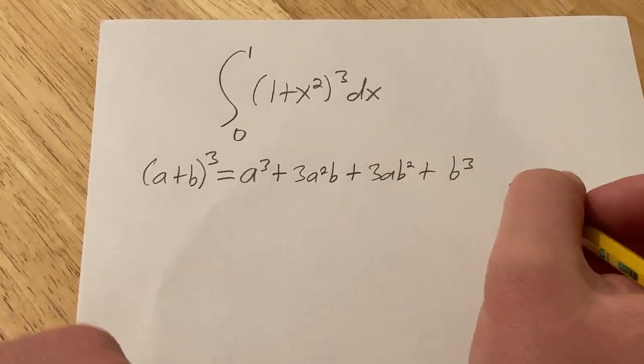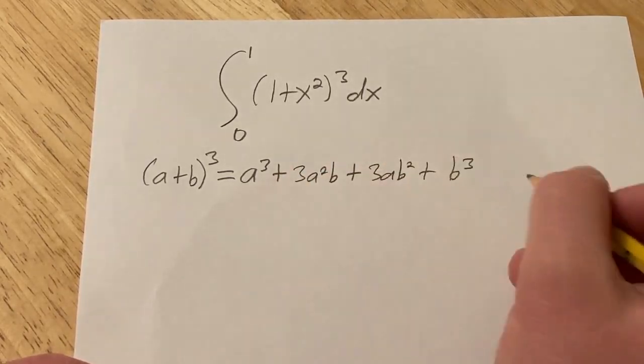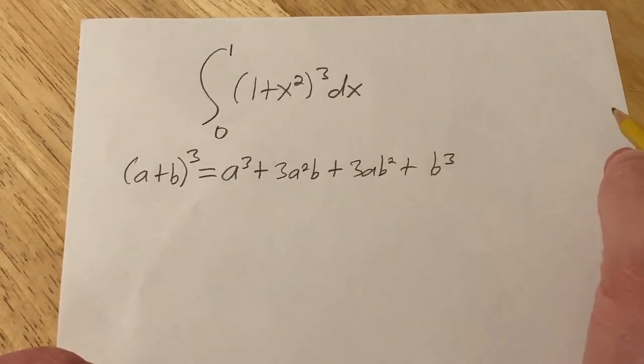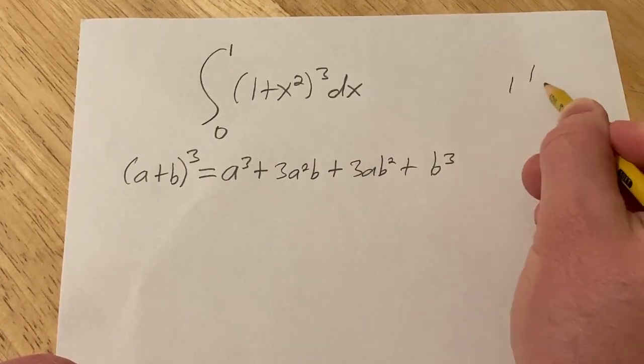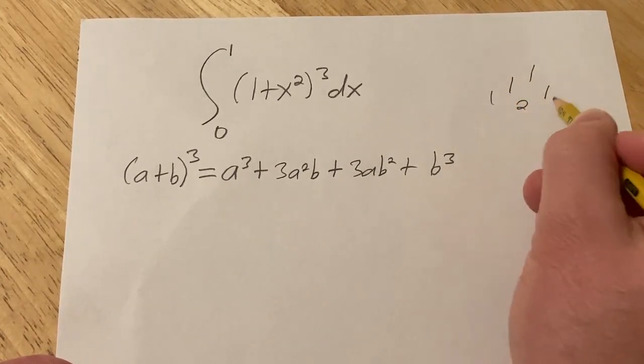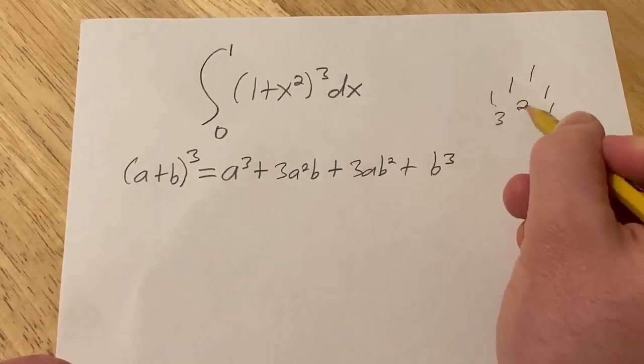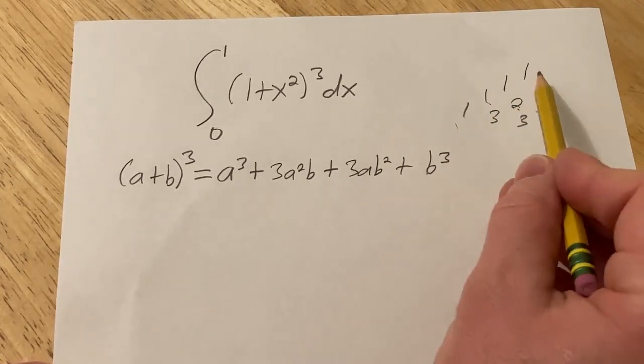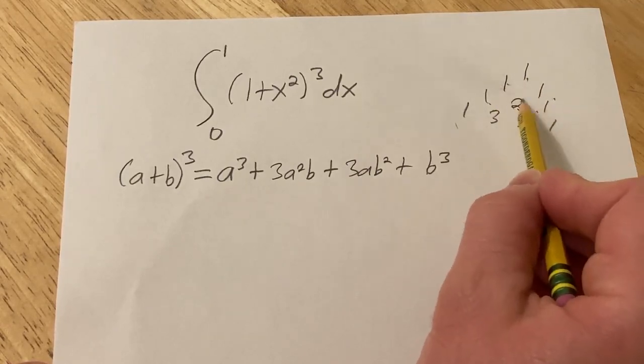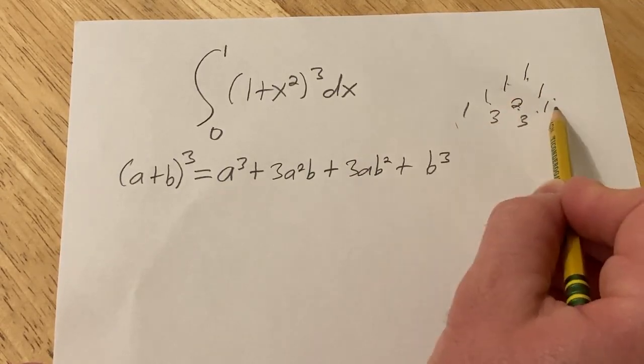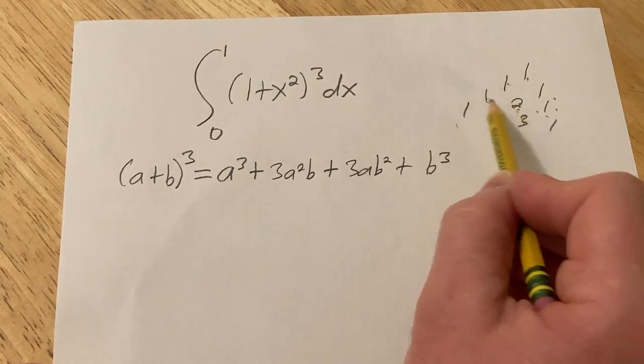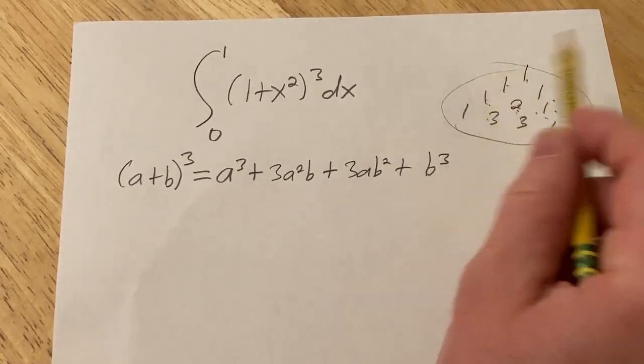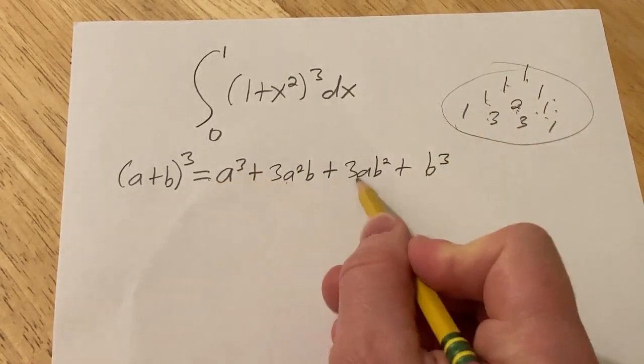And if you're wondering how I wrote that down, it's just from memory. I have it memorized. It's the fourth row in Pascal's triangle. So 1, 1, then 1 plus 2 is 3, 2 plus 1 is 3, then 1. You just memorize the coefficients. So you write down the 1, put 1's on the sides, 1 plus 1 is 2, put 1's on the sides, 1 plus 2 is 3, 2 plus 1 is 3, put 1's on the sides. So Pascal's triangle, and the coefficients are 1, 3, 3, 1.